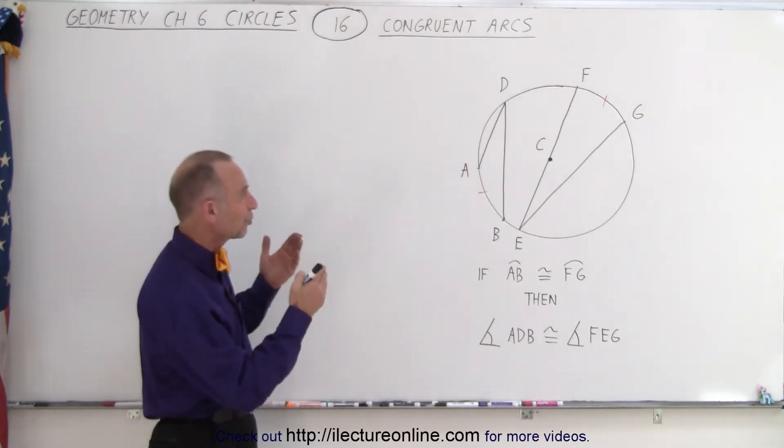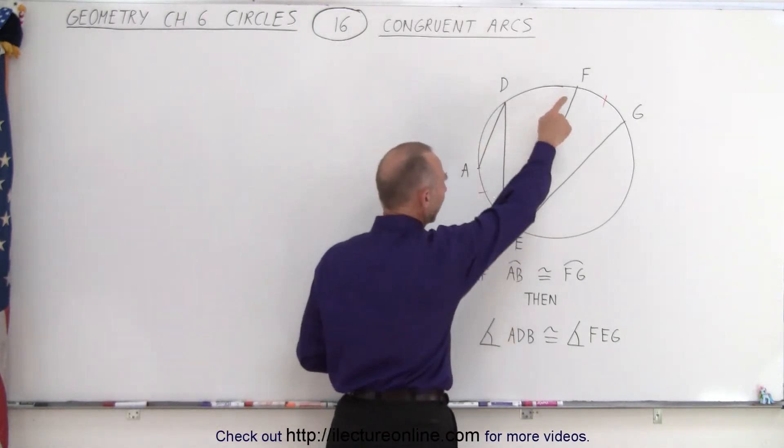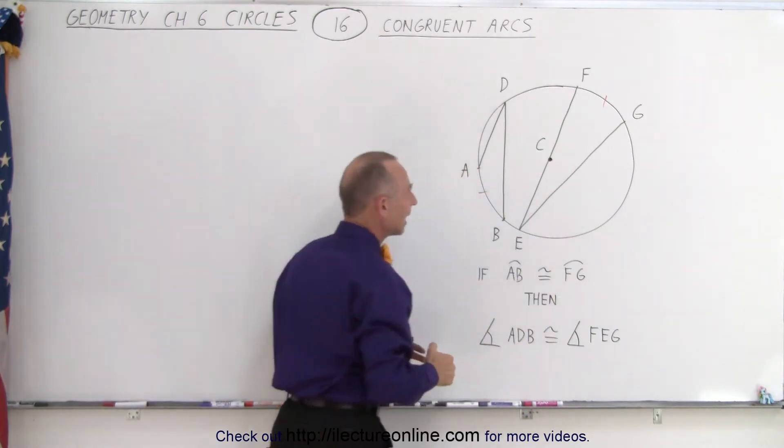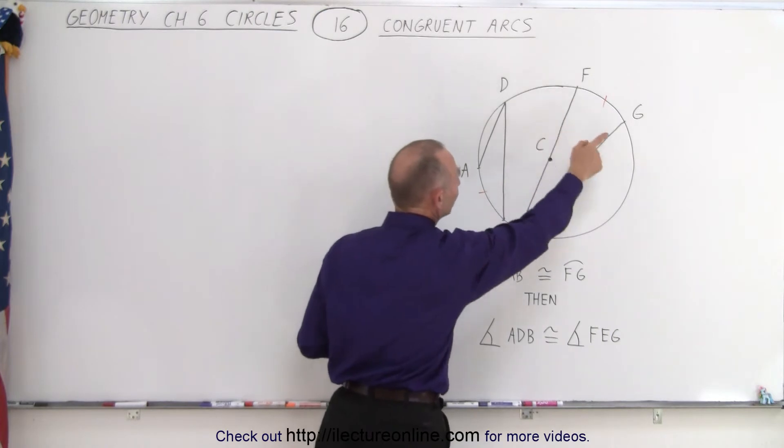So let's say that we have two inscribed angles. We have the angle ADB and the angle FEG. And they have two intercepted arcs, arc from A to B and from F to G.